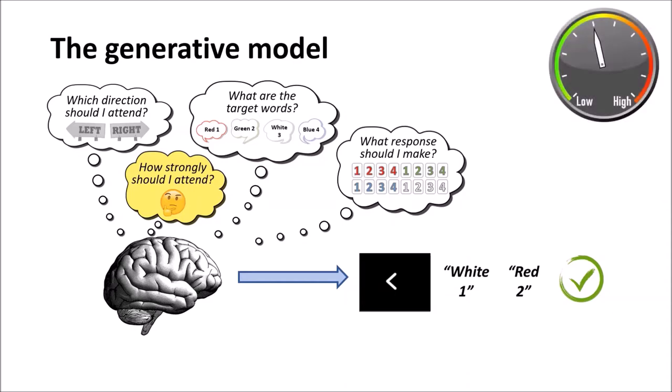In this generative model beliefs about how strongly I should attend affect the precision with which beliefs map to outcomes. We can think of precision like a dial that varies continuously from high to low. When precision is high our beliefs are strongly related to outcomes in the world whereas when it's low our beliefs are only weakly related to outcomes. And you can imagine that people might want to conserve energy by only having high precision when they expect a target stimulus to occur and this relates to long-standing ideas of attention as a resource that needs to be allocated.